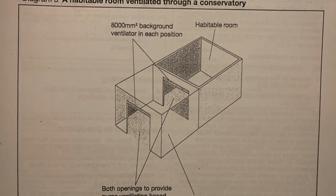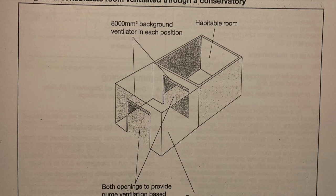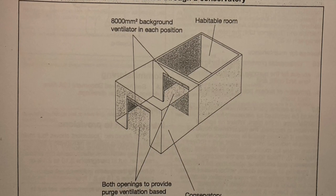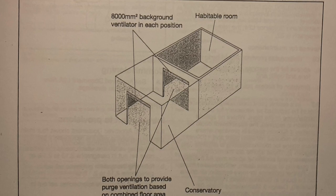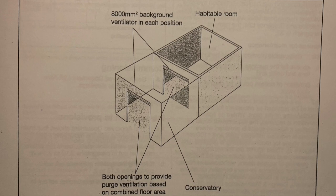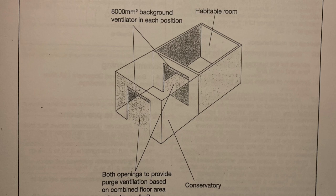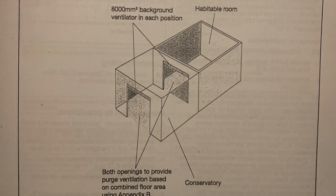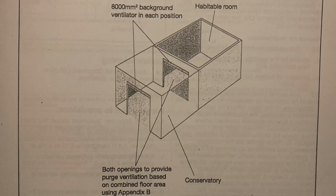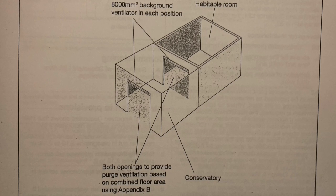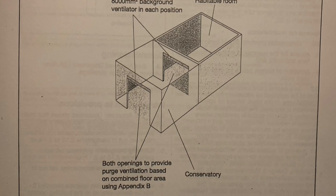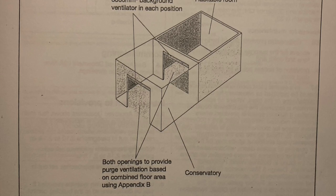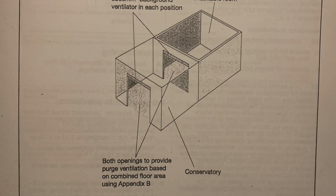The Building Regulations offer an alternative to extraction. The requirements for purge ventilation are fulfilled if: the door from the kitchen to the conservatory or extension, and the door from the conservatory or extension to outside, are each at least 1/20th of the combined floor area of the kitchen and the conservatory or extension. There must also be background ventilation of at least 8,000 millimetres squared, which must be closeable, located at least 1.7 metres above floor level, fitted to the wall between the kitchen and the conservatory, and in the wall of the conservatory to outside.